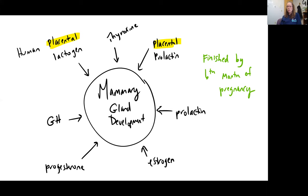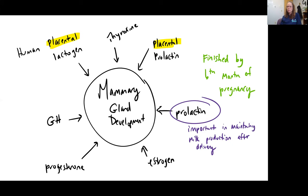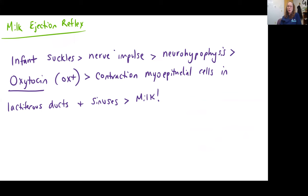This development is really finished by six months of pregnancy, so milk production can be occurring before that pregnancy is complete. Prolactin continues to be released by the adenohypophysis and is important in maintaining milk production even after delivery. The milk ejection reflex is a positive feedback mechanism — when the infant suckles, that triggers a nerve impulse which causes the neurohypophysis to release oxytocin. Oxytocin causes contraction in the myoepithelial cells in the lactiferous ducts and sinuses, triggering the release of milk.